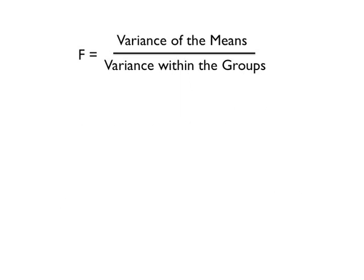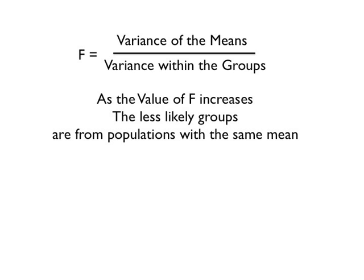Our statistic F represents a ratio of the variance of the means over a number representing the variance within the individual groups. The further apart the means are and the narrower the groups are, the easier it is to distinguish between the groups and the larger the value of F.